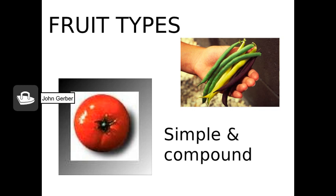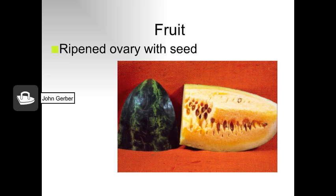Did you know that technically a tomato is not a vegetable? Botanically it's called a fruit because it comes from a fertilized ovary. The same is true for green beans — green beans contain seeds and therefore are fruits from a botanical perspective. Fruit consists of fertilized mature ovules, which are seeds, plus the ovary wall, which may be fleshy as an apple or dry and hard as an acorn.